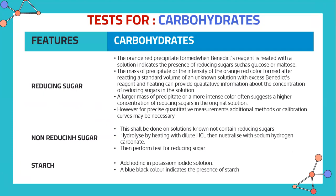For the test for non-reducing sugars, this should be done on a solution known not to contain reducing sugars: hydrolyse by heating with dilute HCl, then neutralise with sodium hydrogen carbonate, then perform the test for reducing sugars. For starch, simply add iodine potassium iodide solution — it will turn a blue-black colour, indicating the presence of starch.